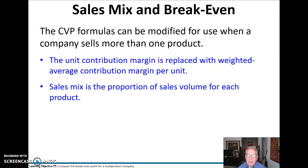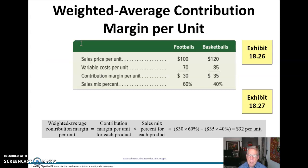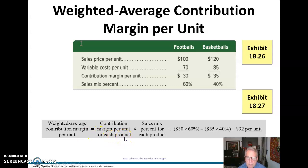We're going to use these CVP formulas that we just went through, but we're going to modify them for use when we sell more than one product. Our unit contribution margin is going to be replaced with a weighted average contribution margin per unit. And our sales mix is going to be the proportion of sales volume for each of our products.